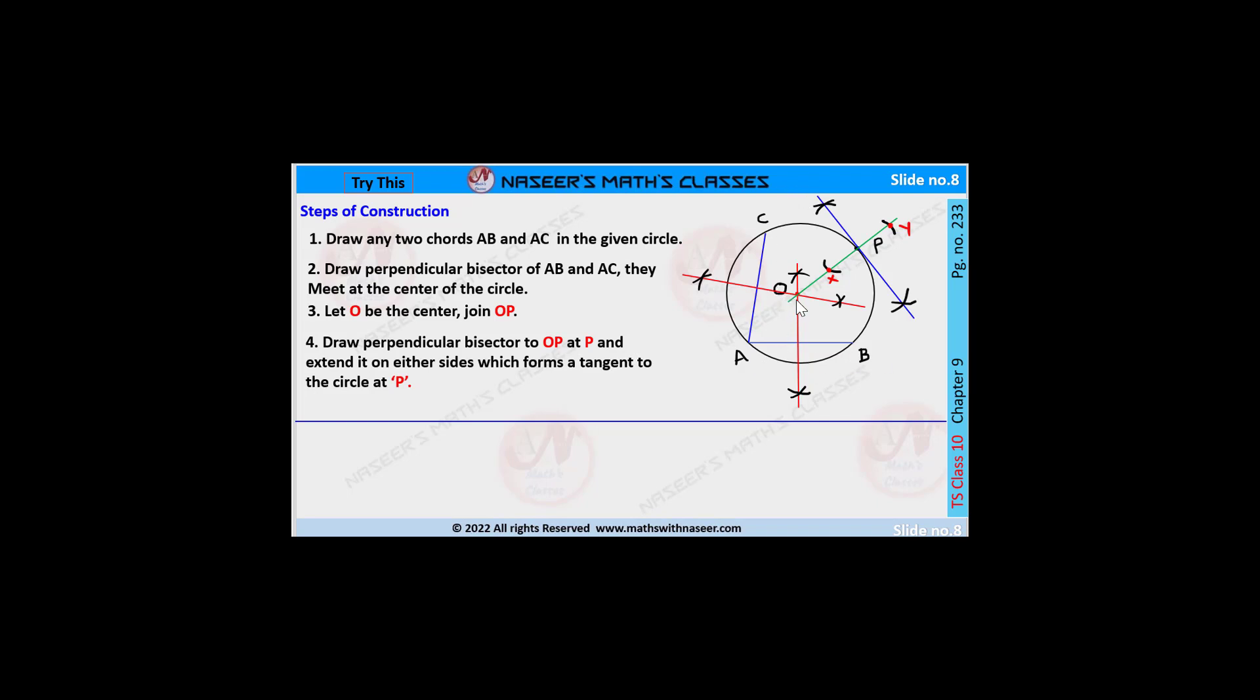Next, take any point P on the circle. Join OP from the center. Draw two arcs on each side of OP, then we get X and Y. Draw perpendicular bisector to OP from X and Y. The perpendicular bisector line passing through point P, this perpendicular bisector is the tangent to the circle at point P.